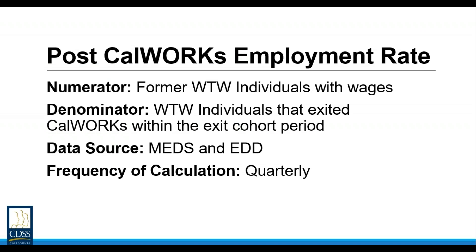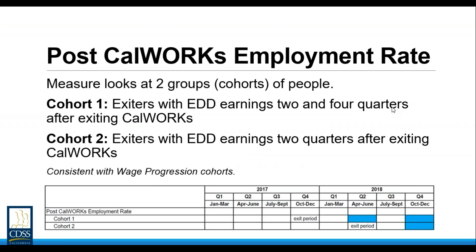For cohort one — those who exited CalWORKs in Q4 2017 — we simply follow them forward two quarters after exit to Q2 2018 and see how many have EDD-reported wages in that measurement period. Then we do the same calculation for the same Q4 2017 exit cohort but now we look four quarters after exit — Q4 2018. For cohort two — those that exited CalWORKs in Q2 2018 — we look forward two quarters to Q4 2018, perform the same calculation, and derive the post CalWORKs employment rate for cohort two.